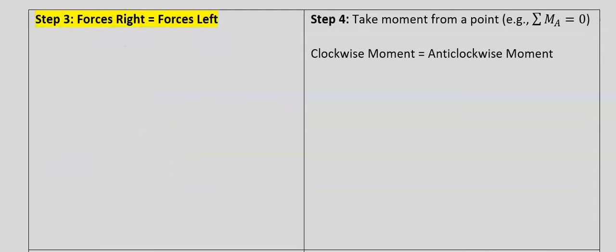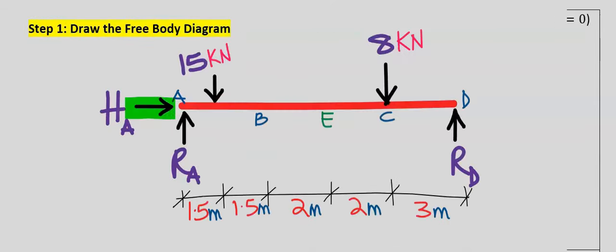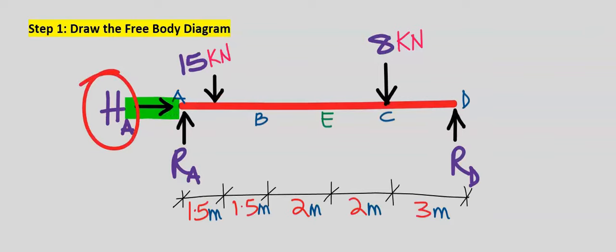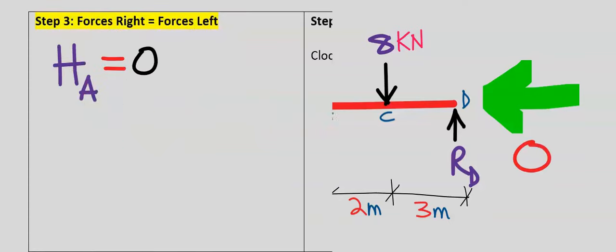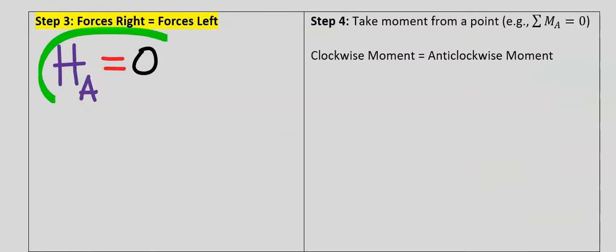Step number three: forces to the right is equal to forces to the left. Forces to the right is H subscript A. However, forces to the left do not exist, so H_A is zero. From step number three, we have that the horizontal force at point A is zero.